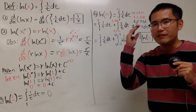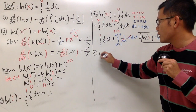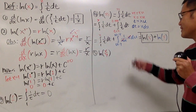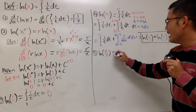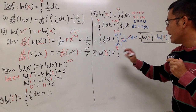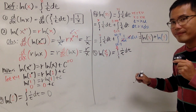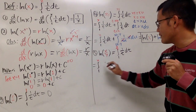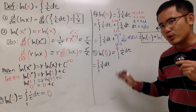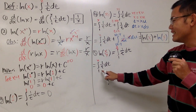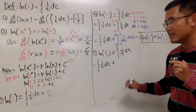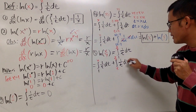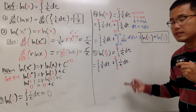Now let's do the quotient property. What if we have ln(x/y)? We write it as the integral from 1 to x/y of 1 over t, dt, and break it apart: integral from 1 to x of 1 over t, dt, plus the integral from x to x/y of 1 over t, dt. The first piece is done — it's ln(x). The second piece requires another substitution.